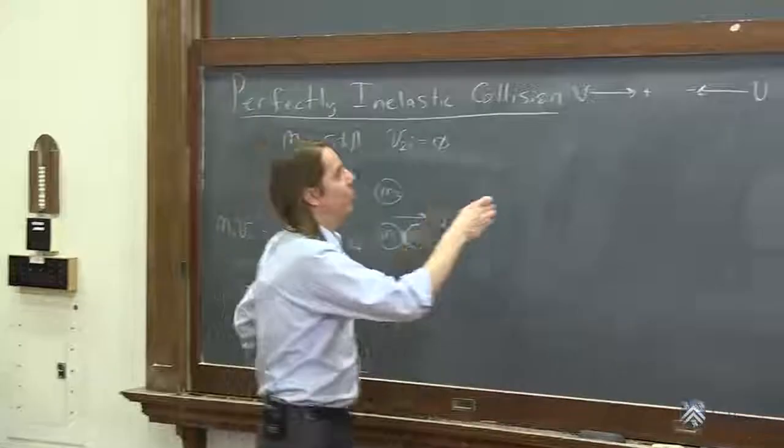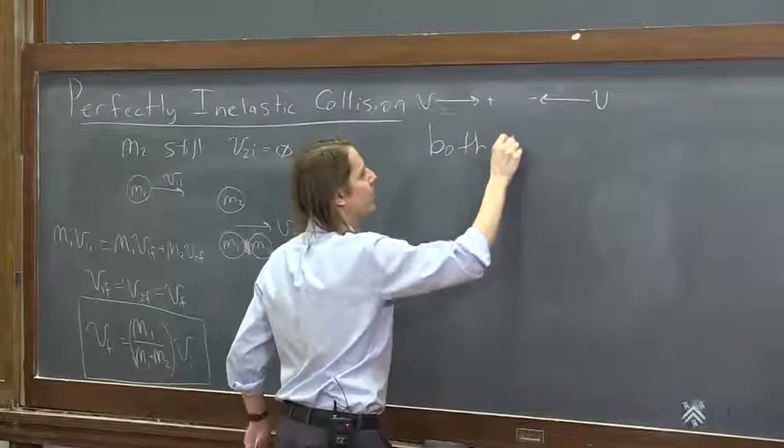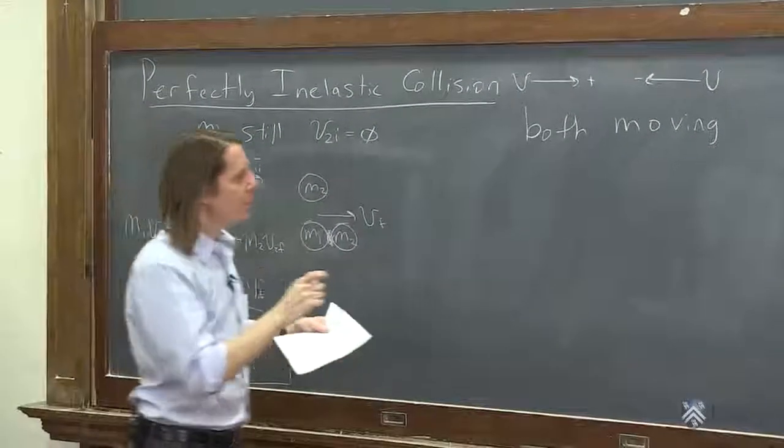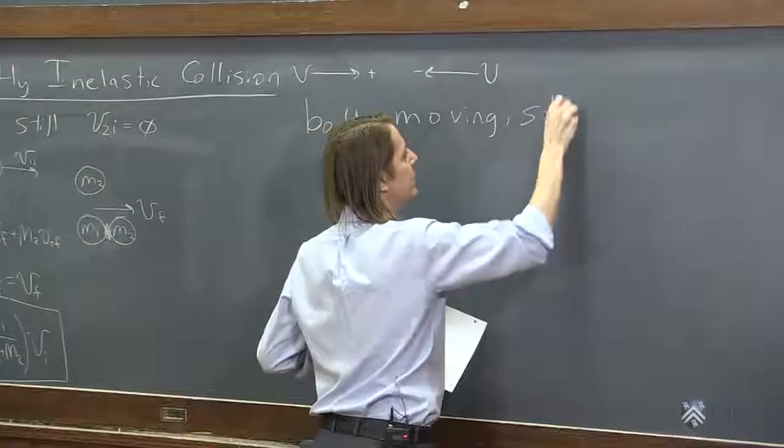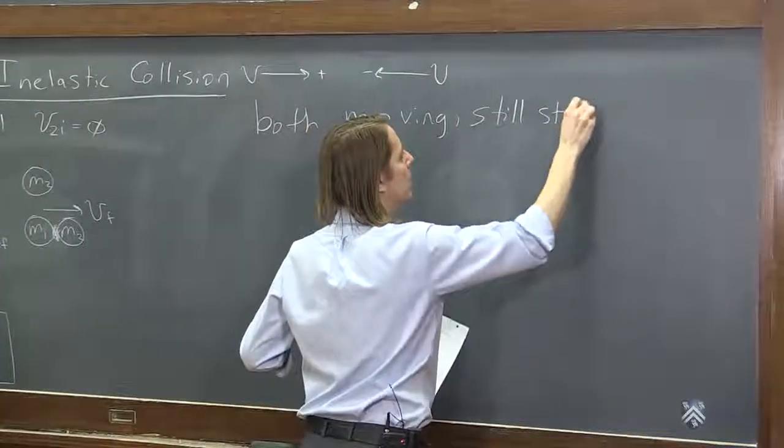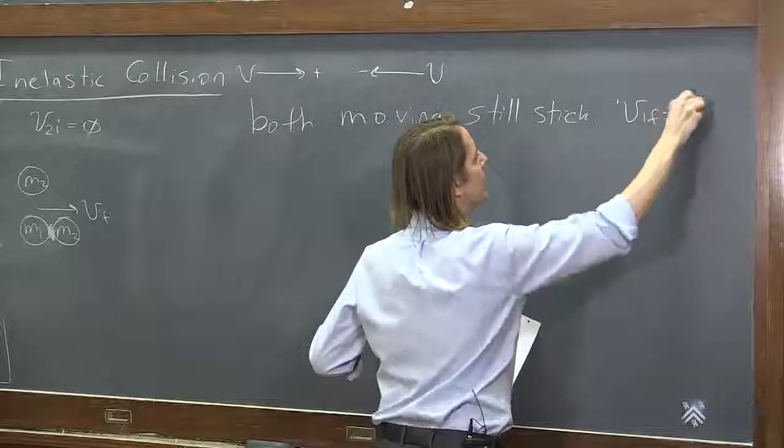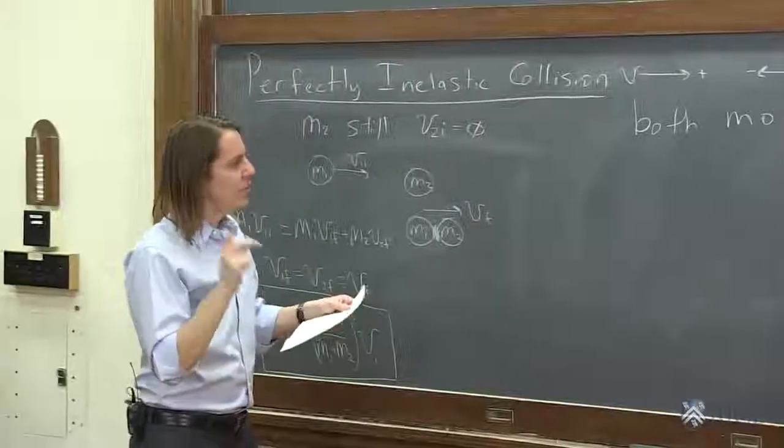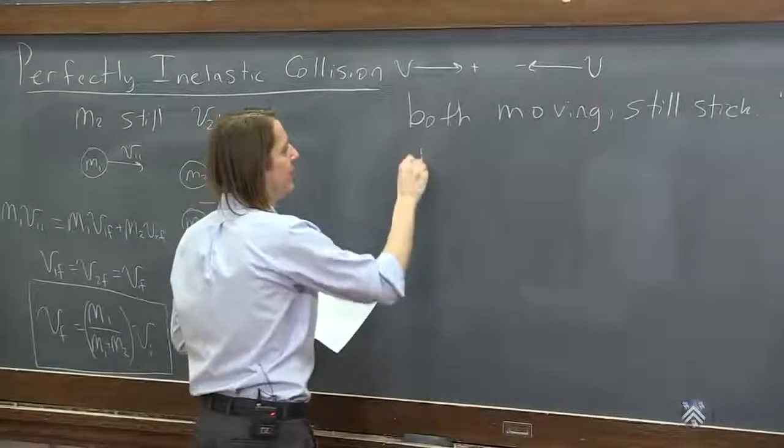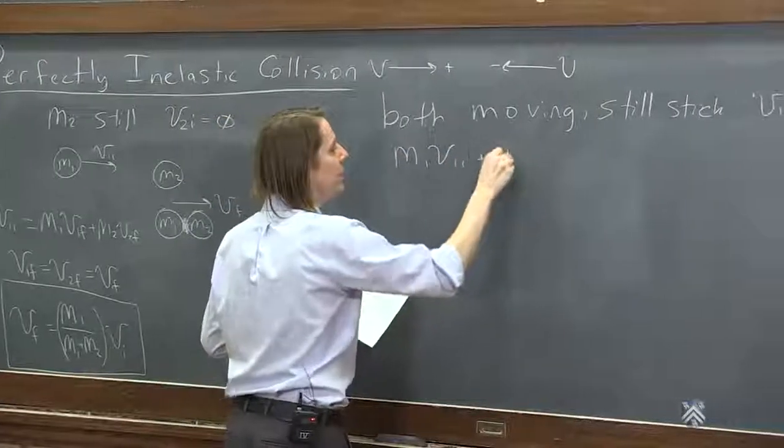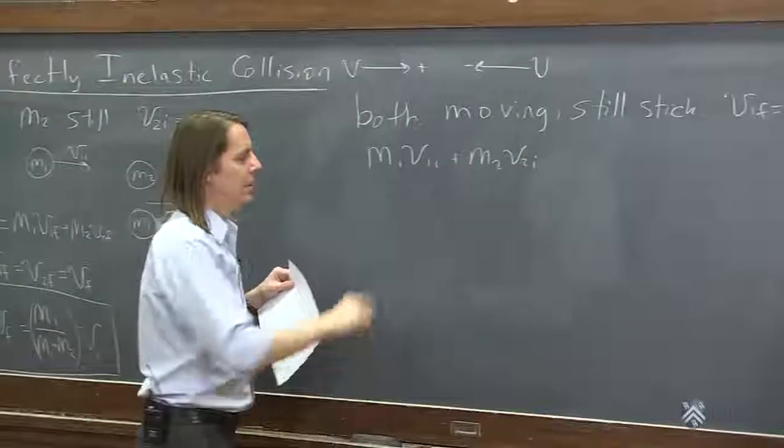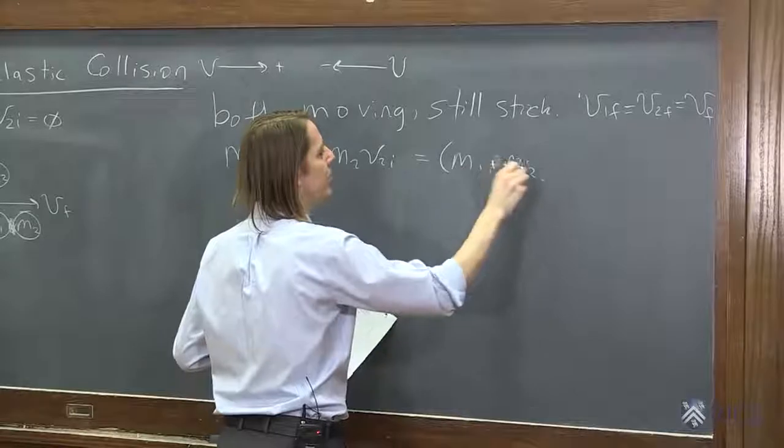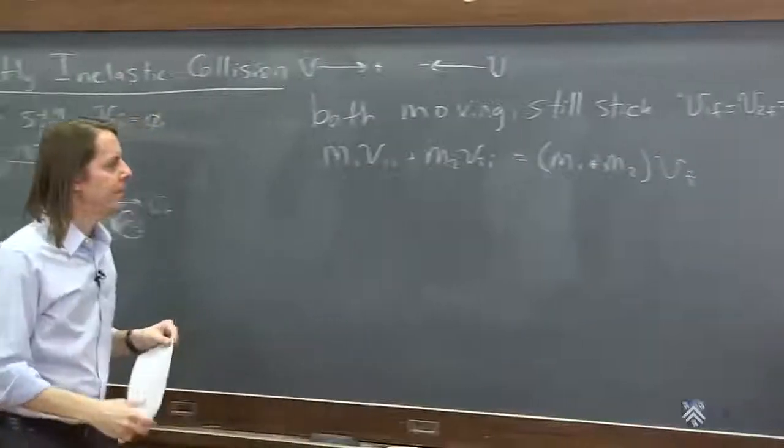So to move forward, we could just make them both move. And it's similar. It's just more complicated looking. All right, we could let them both have velocities. They'll still stick, right? It's still a perfectly inelastic collision. So you still have V1 final equals V2 final equals, we'll just call it, V final. And you still have to conserve momentum. So now we have M1 V1 initial plus M2 V2 initial. That's the initial momentum. And the final, since they're stuck together, you can just go ahead and write it as M1 plus M2 V final, like that.